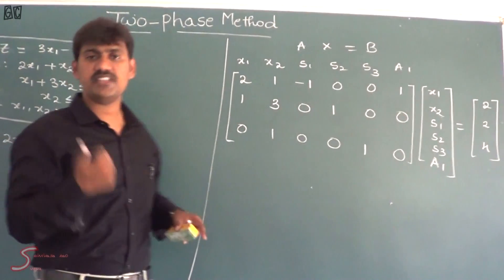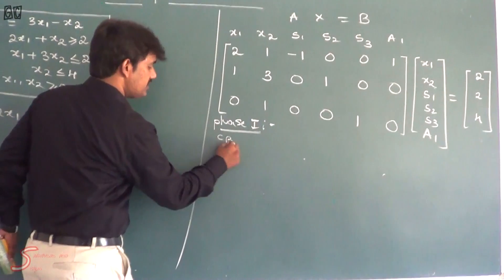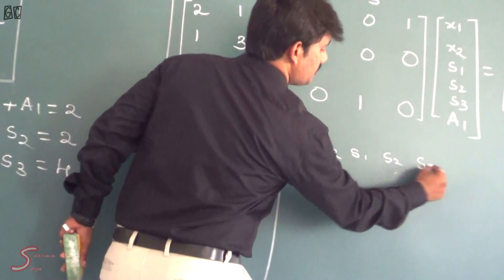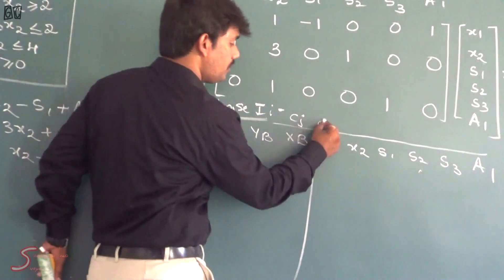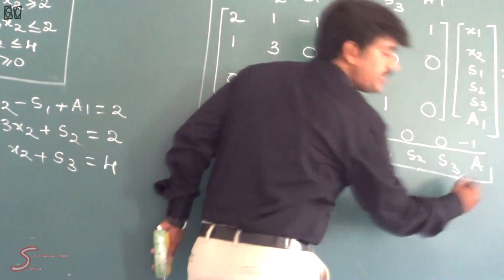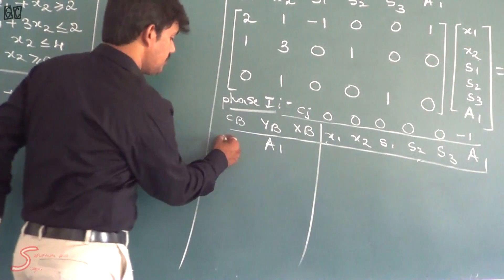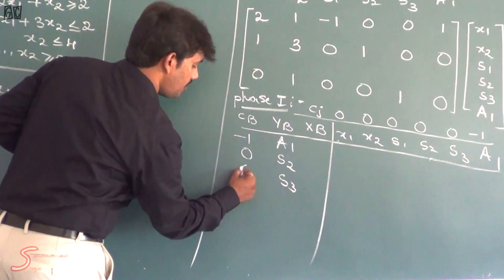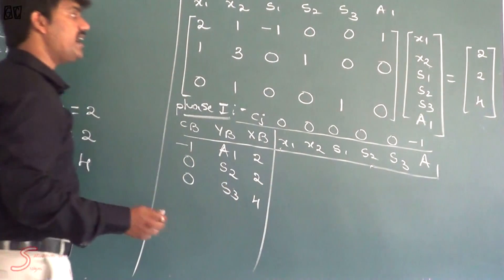Now we have the two-phase method, meaning we have Phase 1 and Phase 2. In Phase 1, all variables have cost 0 except the artificial variable, whose cost is minus 1. So in Phase 1, the cost of a1 is minus 1, and the costs of s2 and s3 are 0. I am going to represent the full matrix with b equal to 2, 2, 4.